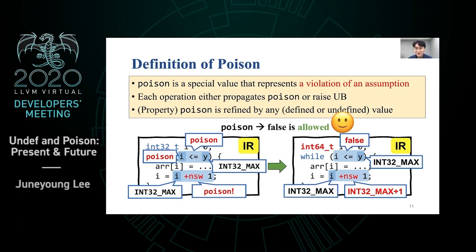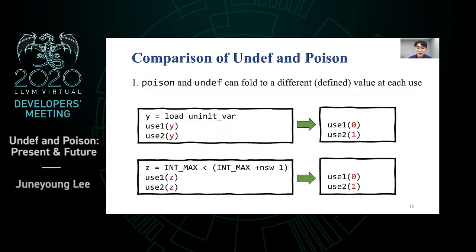This is the end of the background on undef and poison. Let me compare them by introducing one common property and three different properties. First, both poison and undef can be replaced with different values at each use. Since two undefs are not correlated, it is okay to fold them into different values, such as 0 and 1. Similarly, z is poison due to signed overflow and two uses of z can see different values. These transformations are counter-intuitive but helpful for doing more optimization.